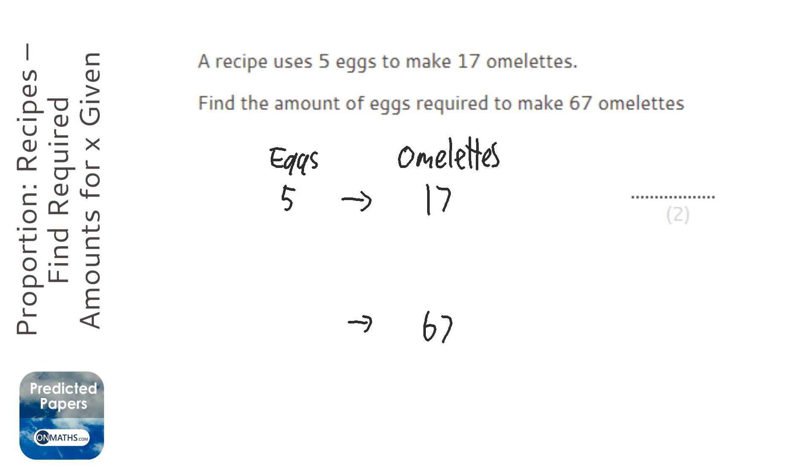Now, the easiest way, because this is a calculated question, is all we do is find out how many eggs are needed for one omelette and then find out how many are needed for 67.